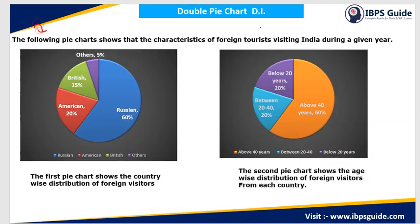The direction of the question is: the following pie chart shows the characteristics of foreign tourists visiting India during a given year. So in a given year, certain foreign tourists are visiting India, and these two pie charts are giving us the characteristics of those foreign tourists.